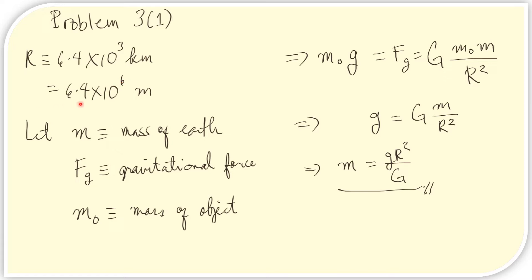First, let us write what is given in the problem. The radius of the Earth is 6.4 times 10 to the third kilometers; converting to base units we obtain R. Lowercase M denotes the mass of the Earth, F sub G the gravitational force between the Earth and the object, and M sub O the mass of the object on the surface. We know this gravitational force can be expressed as the weight or via the universal law of gravitation. The mass of the object cancels from both sides, and we rearrange to obtain an expression for the Earth's mass.